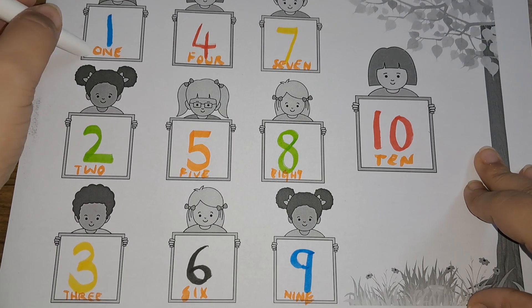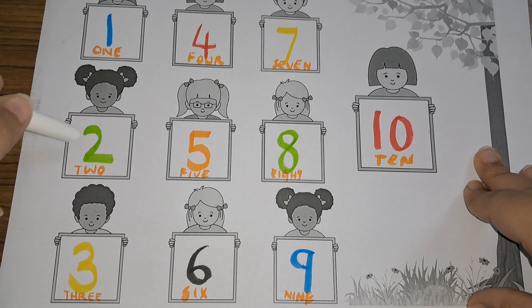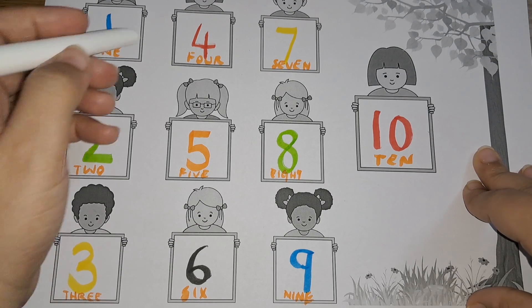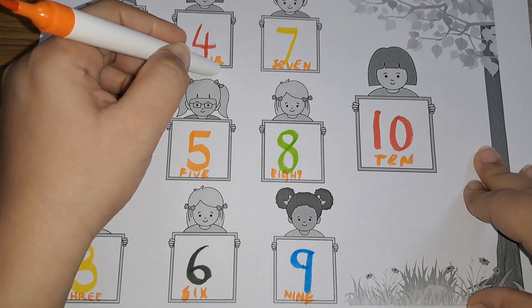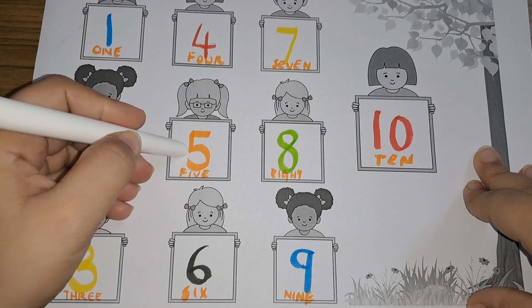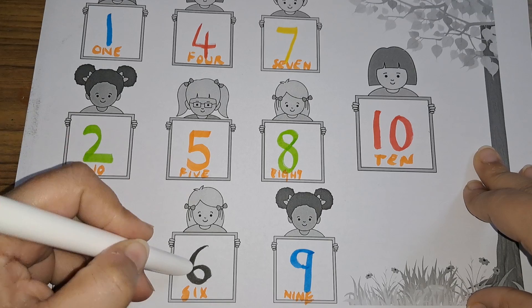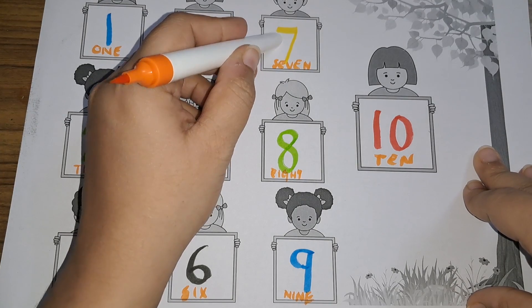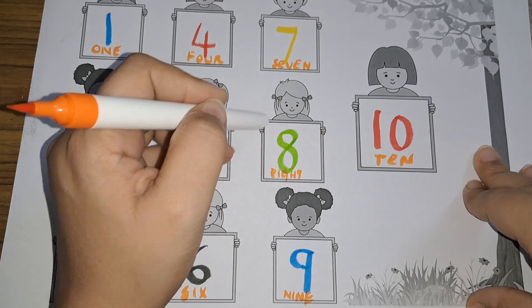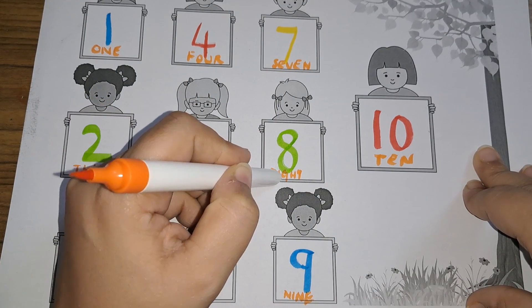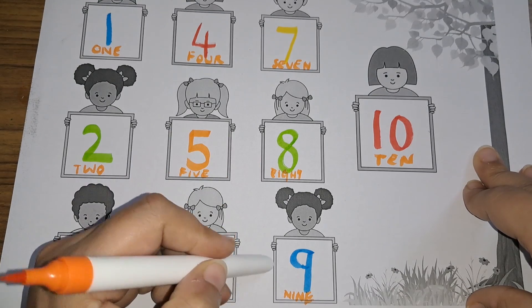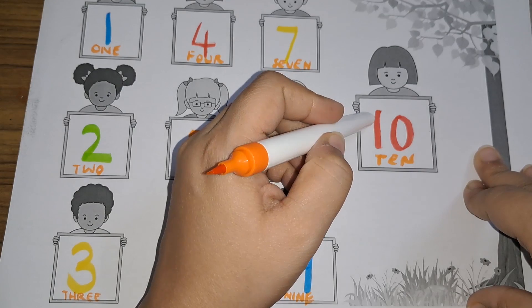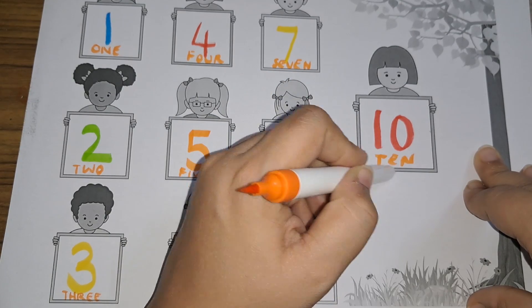One, O-N-E, one. Two, T-W-O, two. Three, T-H-R-E-E, three. Four, F-O-U-R, four. Five, F-I-V-E, five. Six, S-I-X, six. Seven, S-E-V-E-N, seven. Eight, E-I-G-H-T, eight. Nine, N-I-N-E, nine. Ten, T-E-N, ten.